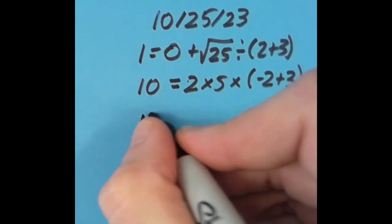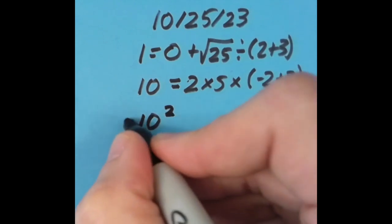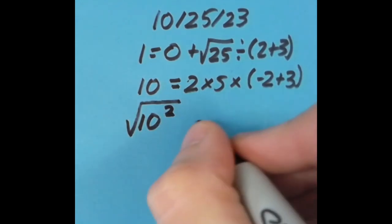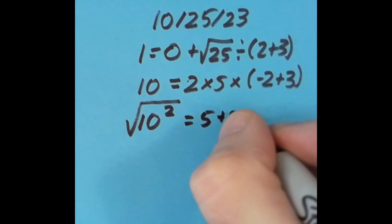With the equal sign over another spot to the right, I said let's do 10 squared to get 100, then take the square root of 100 to get back to 10. That's going to be equal to 5 plus 2, which is 7, plus 3, which is 10. So that works.